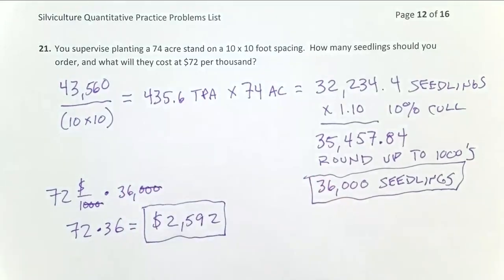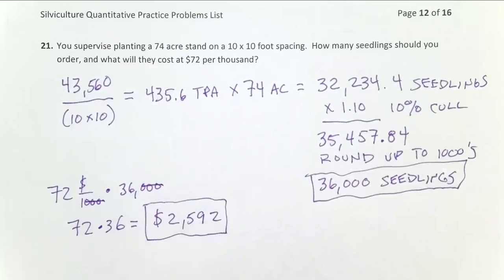If we had forgotten to divide by the 1,000 right there, we would have told the landowner that they need to spend $2.592 million on seedlings, which should clearly be absurd to plant a 74 acres stand. So avoid that common mistake. So remember, three steps here. You have to scale it by your cull after you multiply by your acreage and finally round up to the nearest thousand. So that's how you would figure out the cost of ordering seedlings.